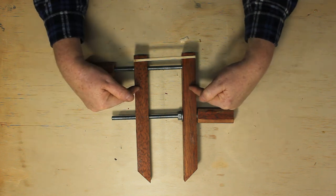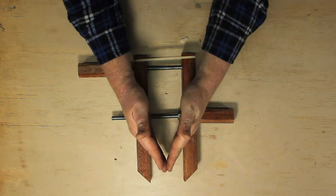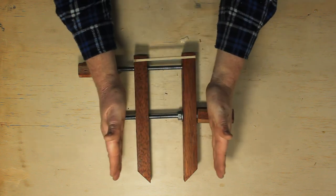You can also buy these in the shop. The ones that you buy are more flexible because they'll allow you to bring in the jaws at an angle. This particular design, the jaws have to be kept parallel.